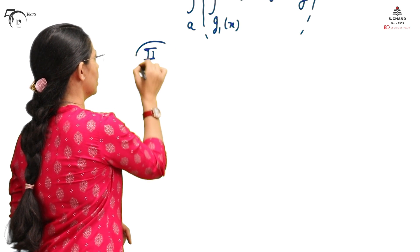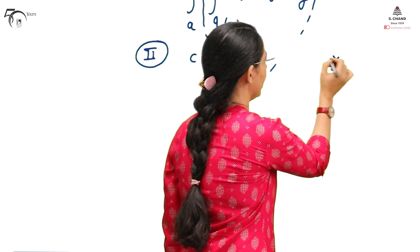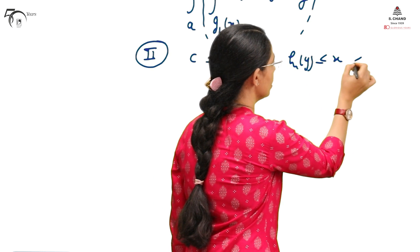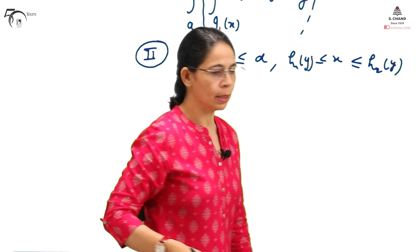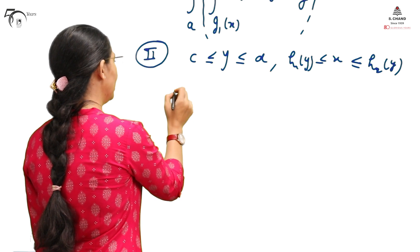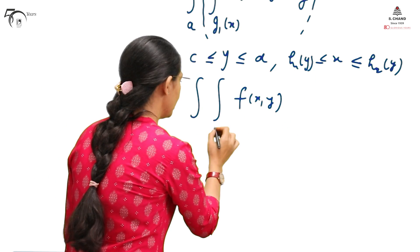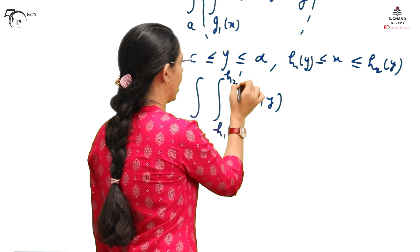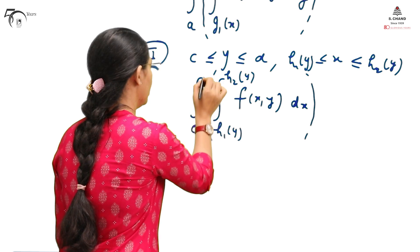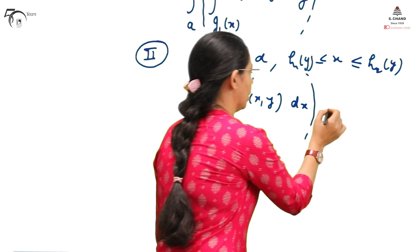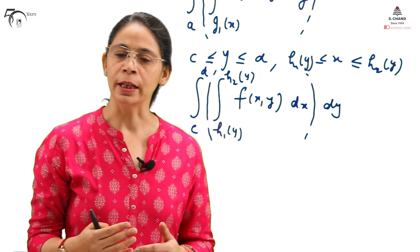In the second form, the limits for y are constant — say C to D — and the limits for x are in the form of functions H1(y) and H2(y), which are continuous over C to D. In that case, we integrate f(x, y) with respect to x first, substituting H1(y) and H2(y) as limits for x. The resultant is then integrated with respect to y from C to D. This is how Fubini's theorem allows us to integrate over a non-rectangular region.